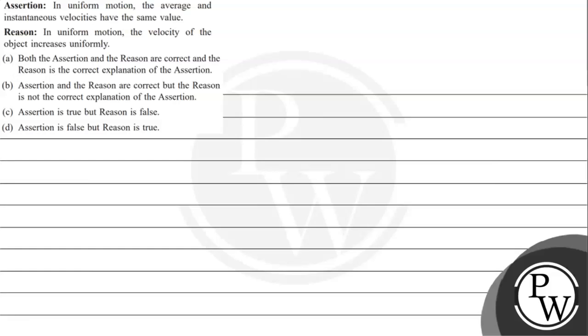Hello guys, let's read the given question. The question says: Assertion — in uniform motion, the average and instantaneous velocity have the same value. Reason — in uniform motion, the velocity of the object increases uniformly.